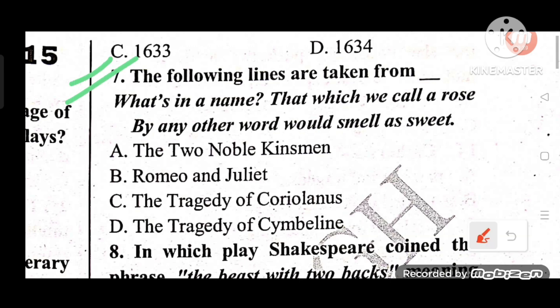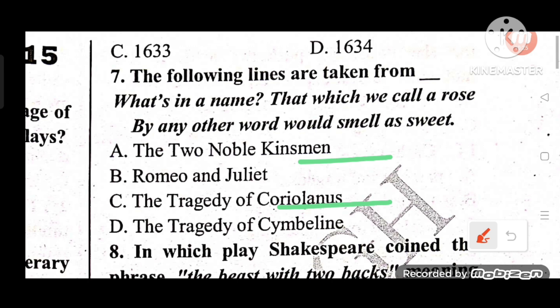Question 7: The following lines are taken from which play? 'What's in a name? That which we call a rose by any other word would smell as sweet.' The idea is that the name doesn't matter — if we call it something else, the smell remains the same. Options: A) The Two Noble Kinsmen, B) Romeo and Juliet, C) The Tragedy of Coriolanus, D) The Tragedy of Cymbeline. The answer is B — Romeo and Juliet.